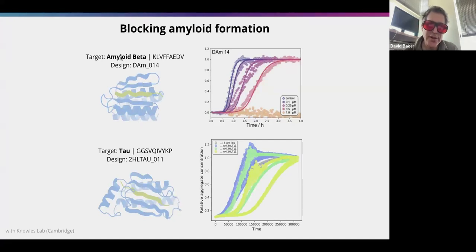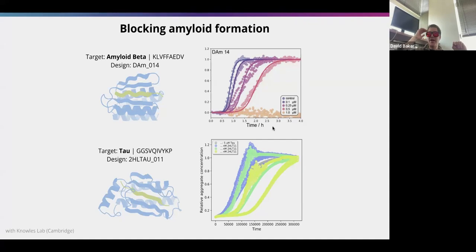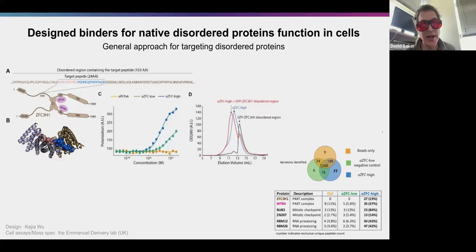It basically involves taking the peptide and embedding it in the middle of a beta sheet — this is the designed protein and this is the peptide. This is beta-amyloid and tau, both implicated in Alzheimer's disease. Those peptides in solution will aggregate, but if you add the designed protein it binds the monomers so they can't aggregate. We're testing this out now in animal models of disease.